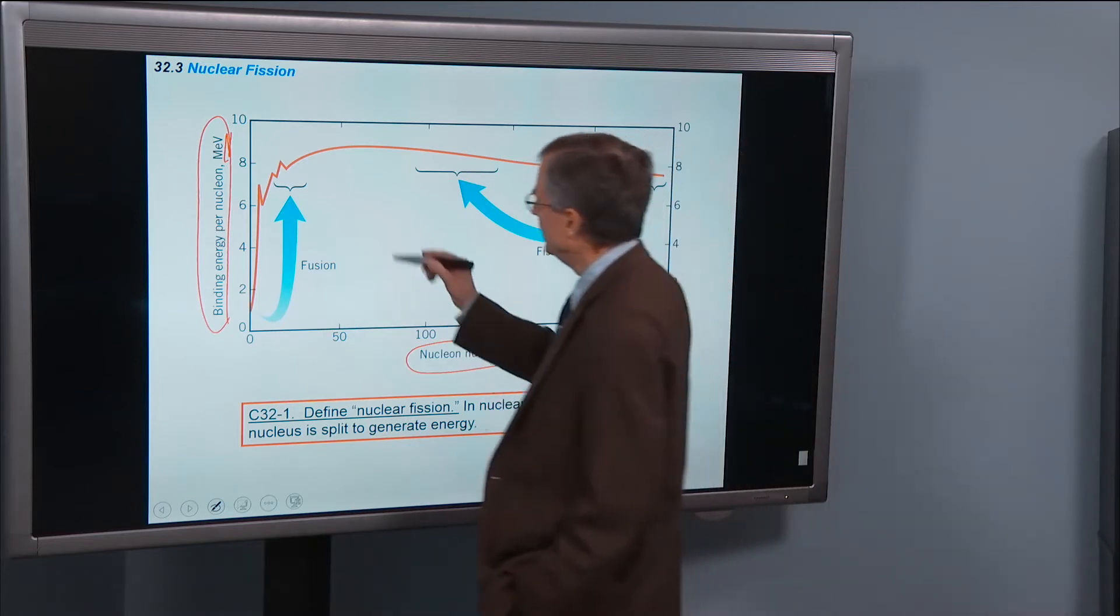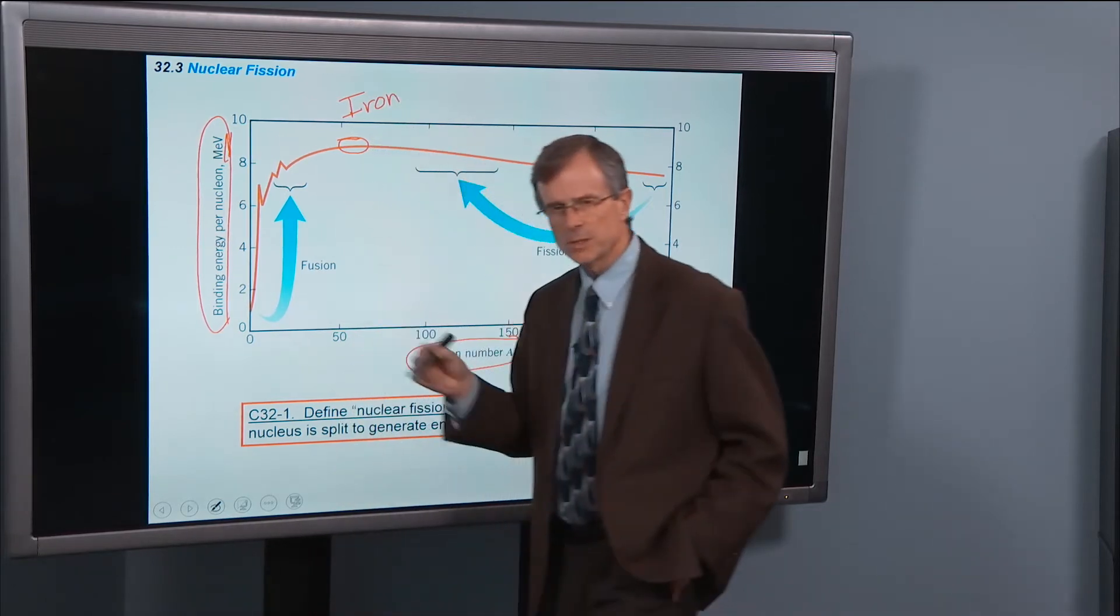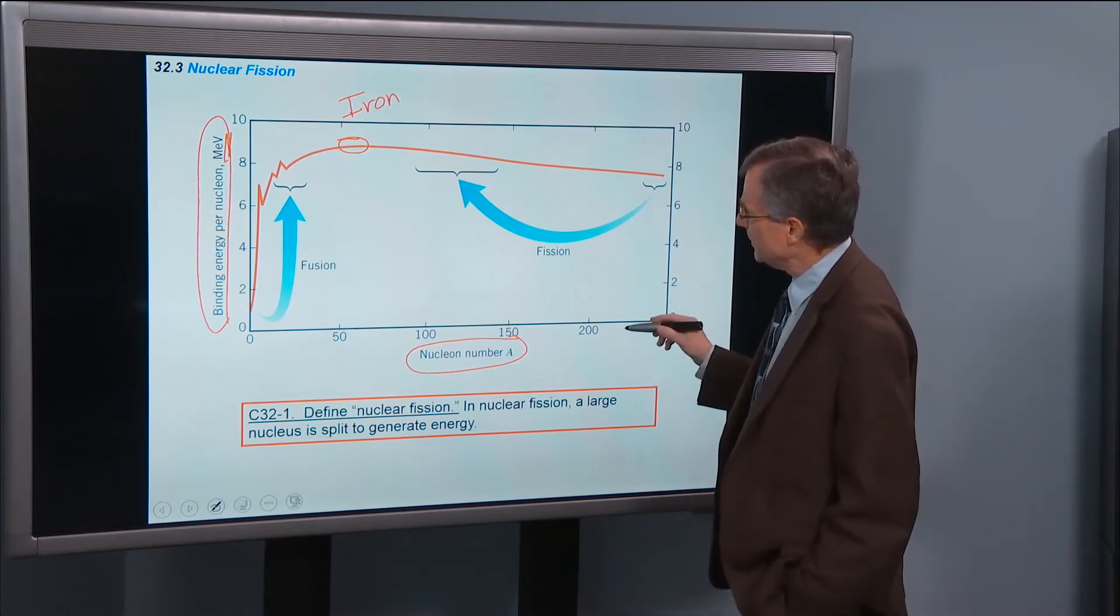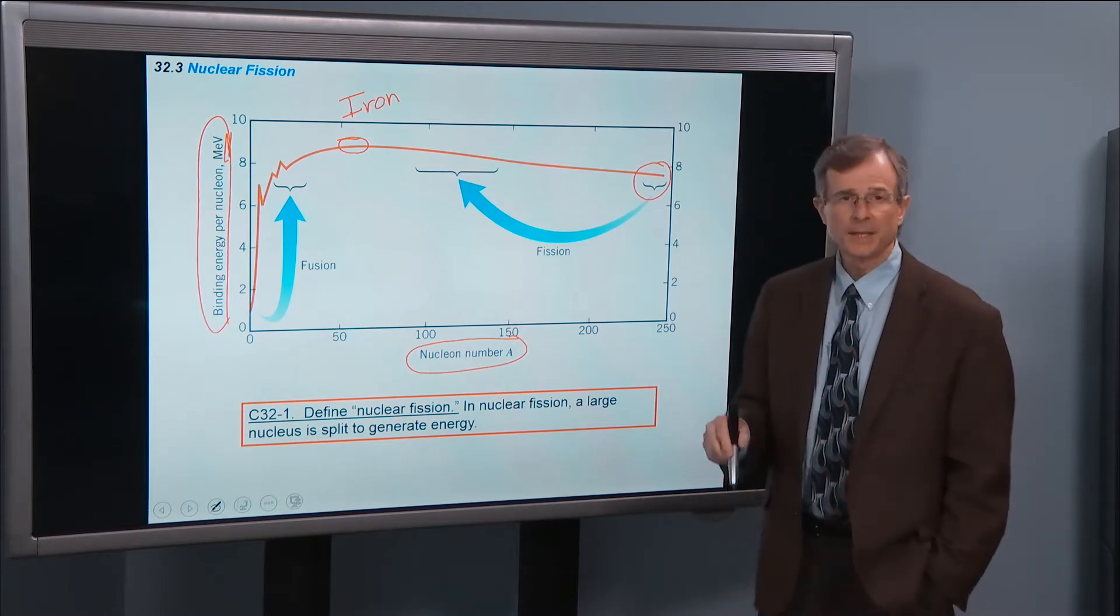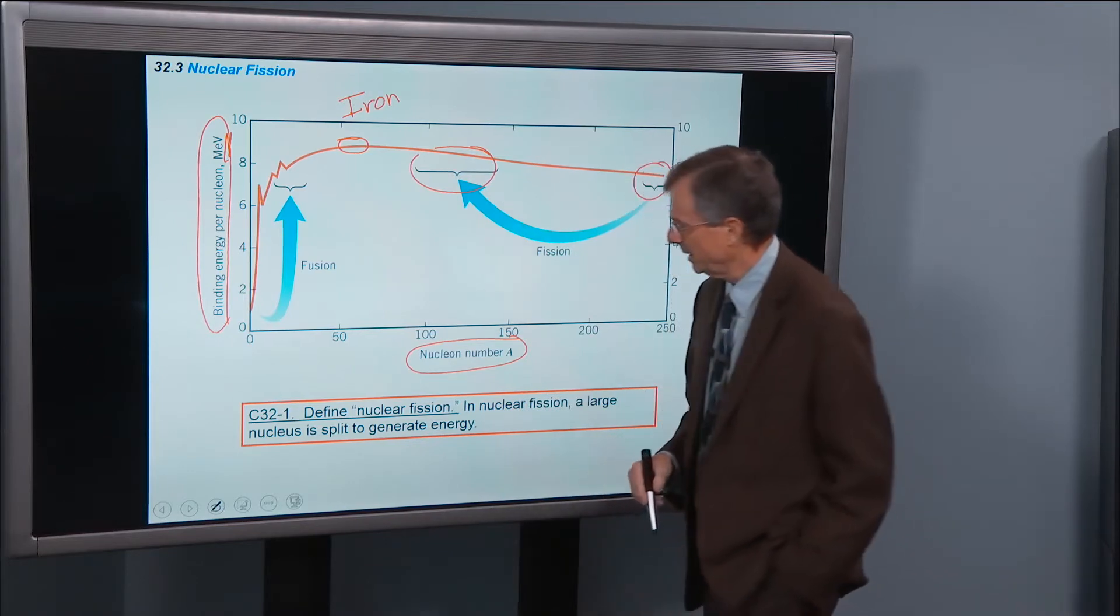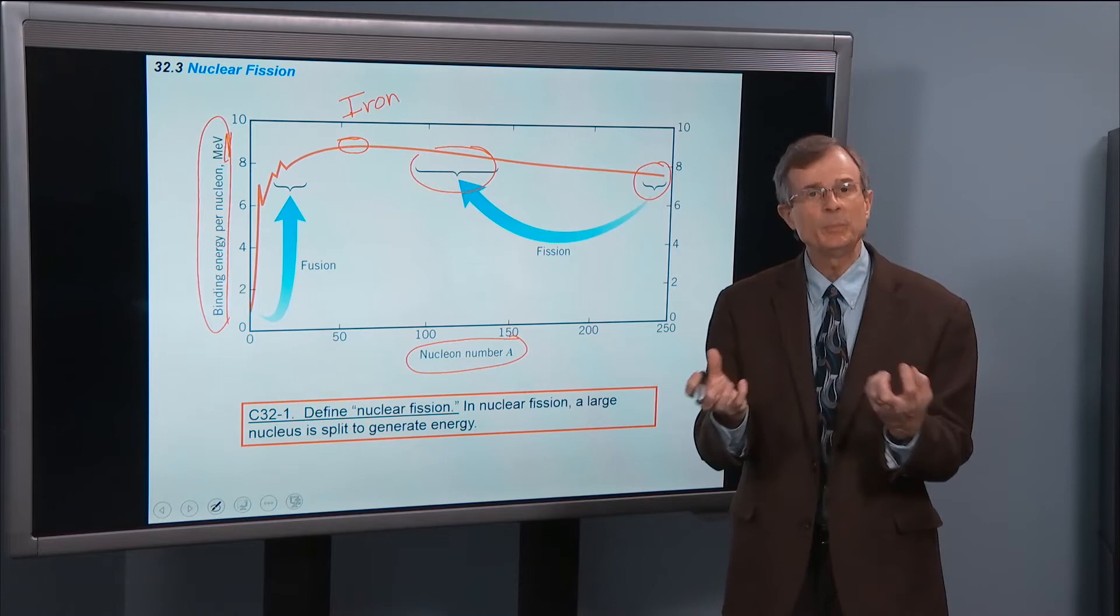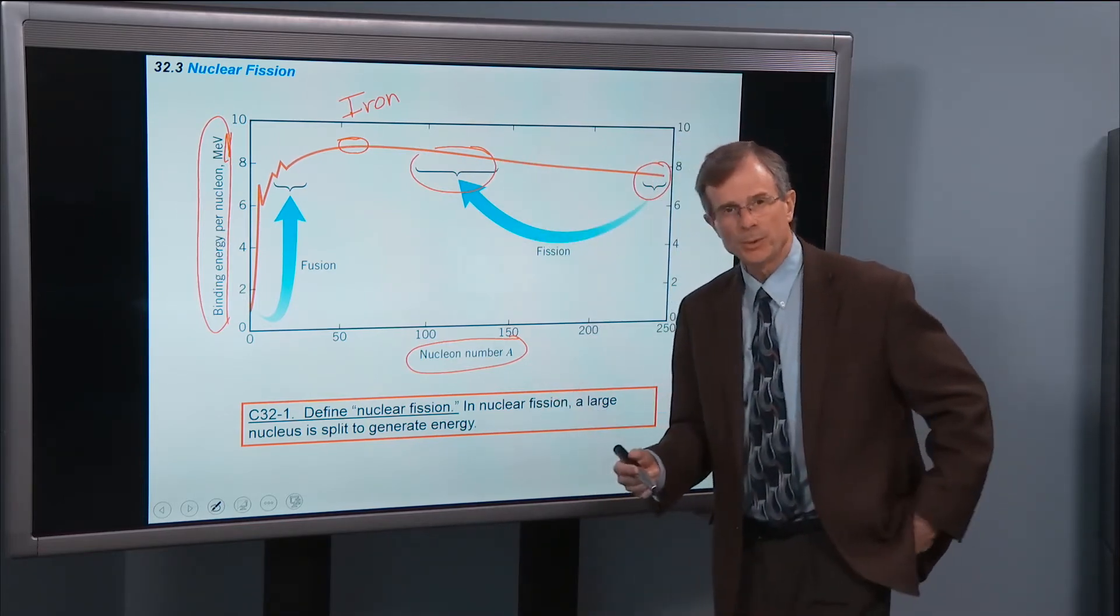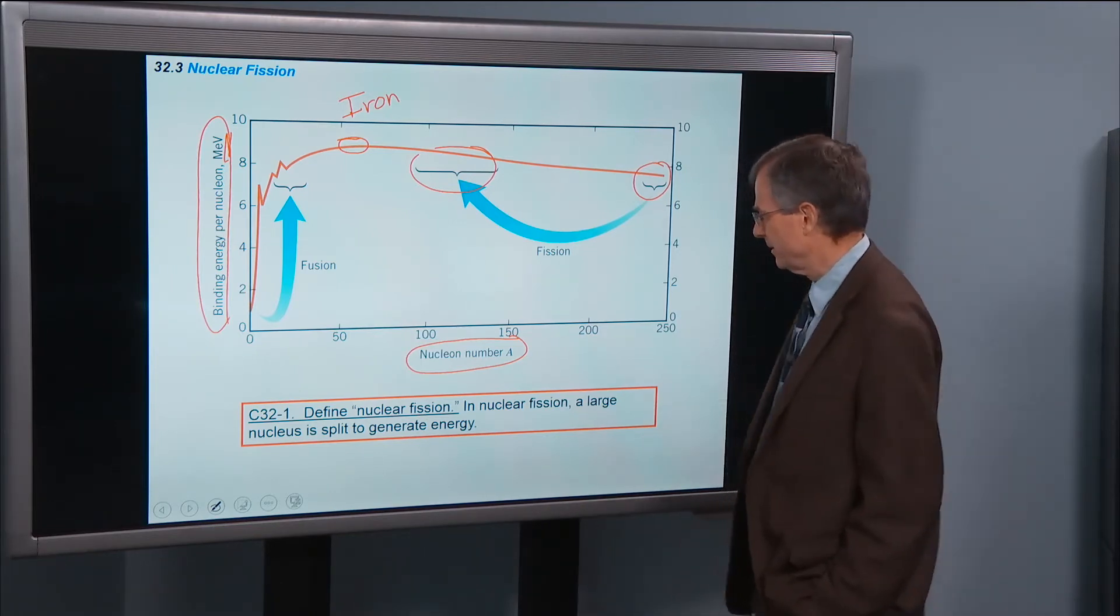Right about here, where there's a peak here, is iron. Iron's close to the peak, not right at the peak. But we see that we can get some energy out of a reaction if we break a very heavy element, like uranium, into one or more lighter elements. So you're breaking a really heavy nucleus into two pieces, and we're moving up in the binding energy per nucleon, which means we're releasing energy in that reaction.